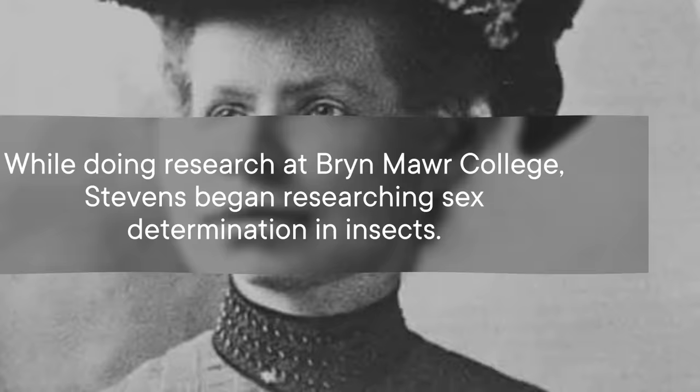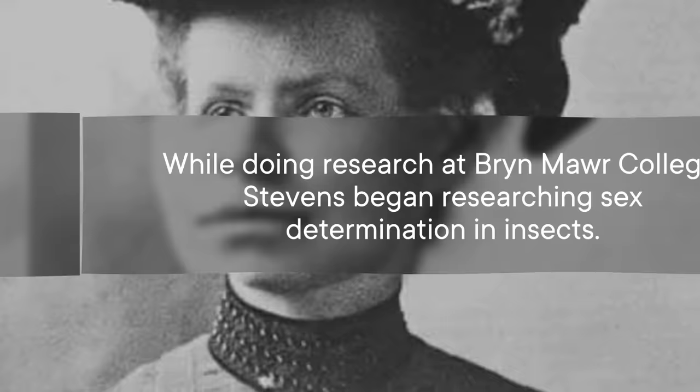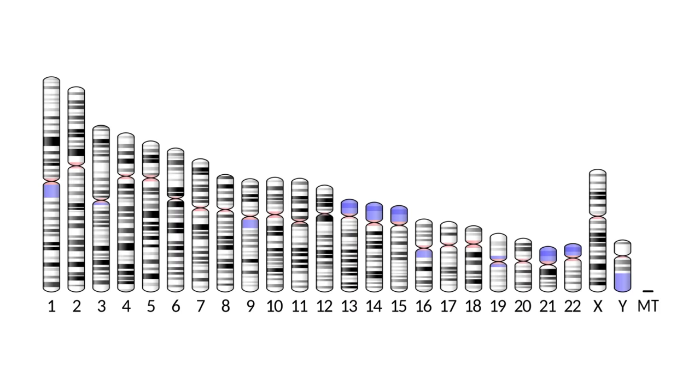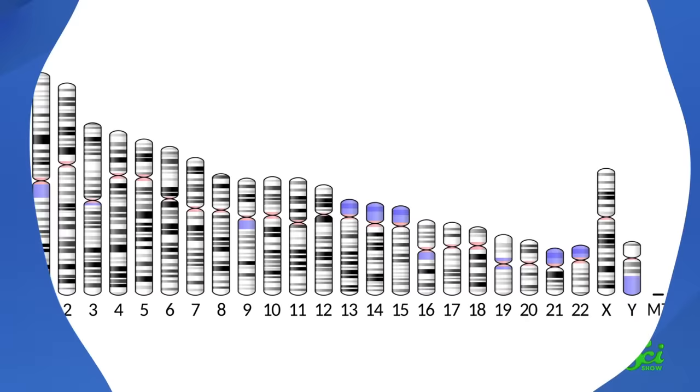But around the turn of the 20th century, a scientist named Nettie Stevens uncovered one of the first right answers. While doing research at Bryn Mawr College, Stevens began researching sex determination in insects. She was convinced it had something to do with the genetic material in eggs and sperm cells. Partly she was influenced by Mendel, who had shown how pea plants could pass traits to their offspring. But also her ideas were informed by a recent discovery — the identification of chromosomes — rod-shaped structures that were packages of genetic material responsible for carrying traits from parent to child.